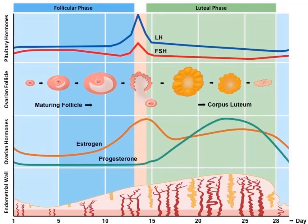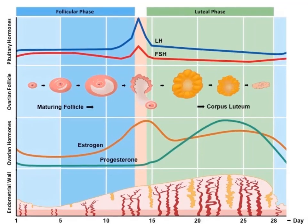If fertilization doesn't occur, the corpus luteum eventually breaks down and degenerates — usually about two weeks. When it does degenerate, estrogen and progesterone levels drop, and the endometrium can no longer be maintained. The endometrial layer is sloughed away and eliminated from the body as menstrual blood — this is known as a woman's period. As estrogen and progesterone levels are now too low to inhibit the anterior pituitary, the cycle starts to begin again. You have to know how the hormone levels change and be able to describe the changes in both the uterus and the ovary.